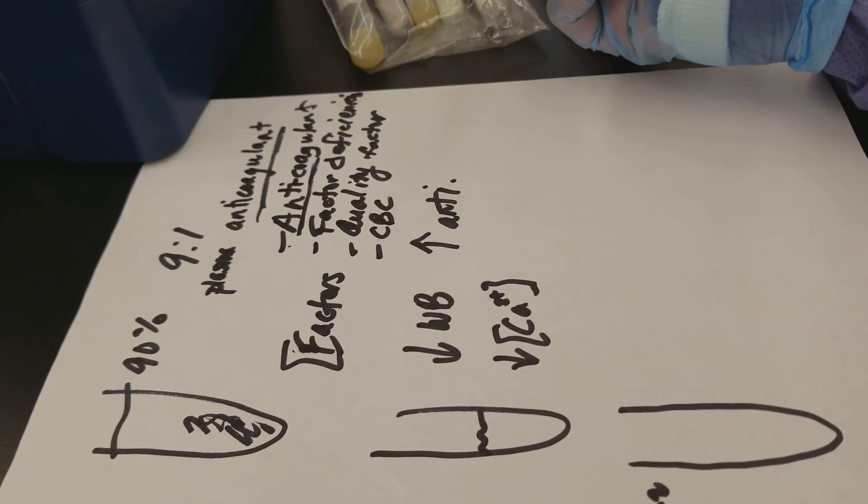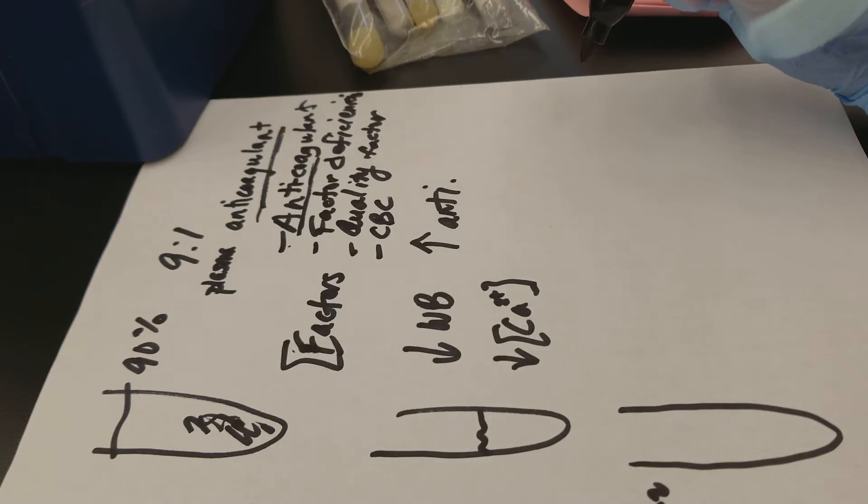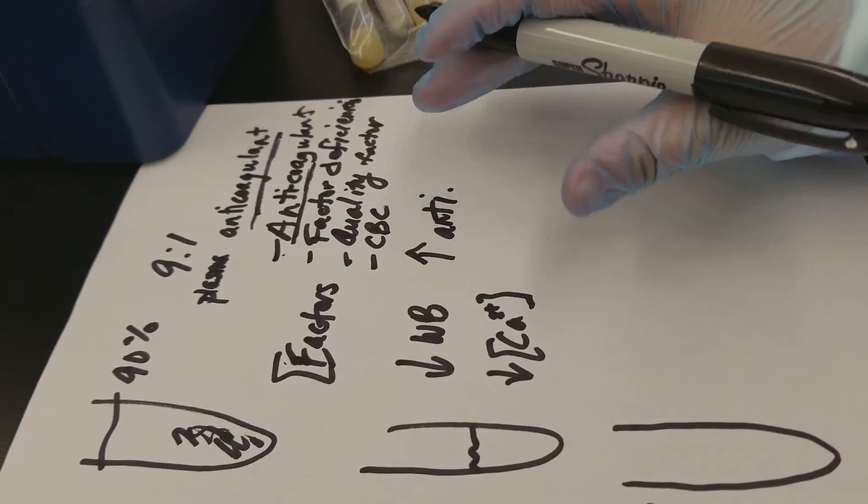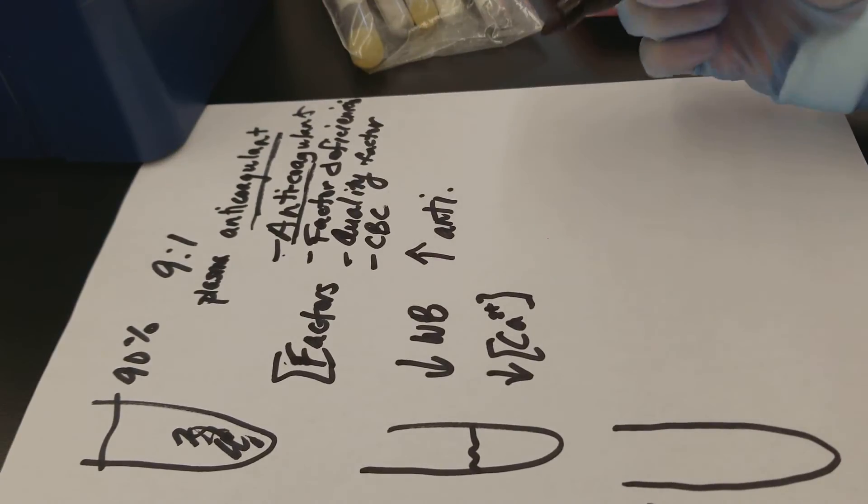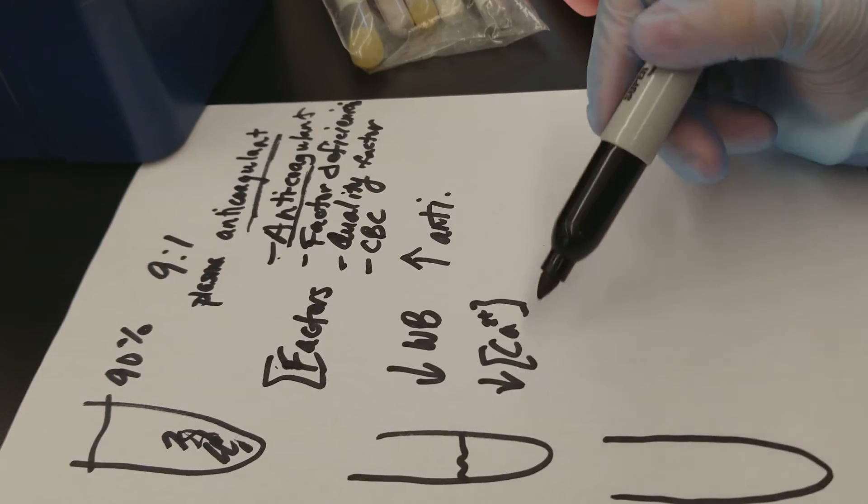So with PTT, we're thinking heparin. With PT, we're thinking warfarin and it can also be called coumadin. So when you're working on the coagulation bench, you want to make sure that you are looking for the correct medication when you're investigating prolonged results.